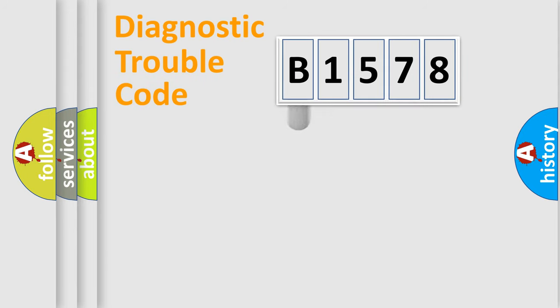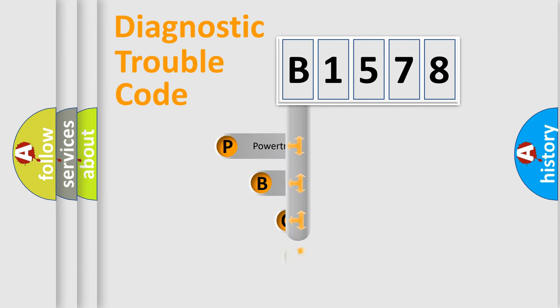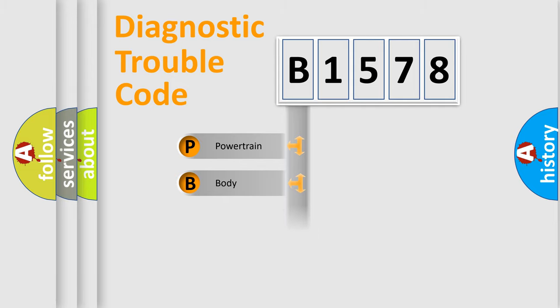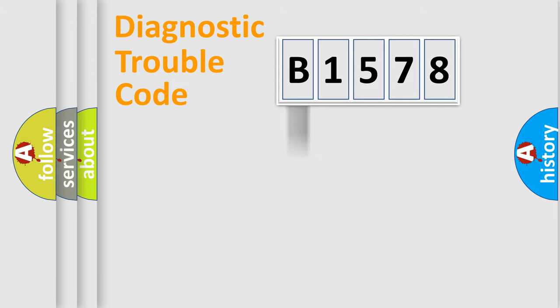Let's look at the history of diagnostic fault code composition according to the OBD2 protocol, which is unified for all automakers since 2000. We divide the electric system of the automobile into four basic units: Powertrain, Body, Chassis, and Network.